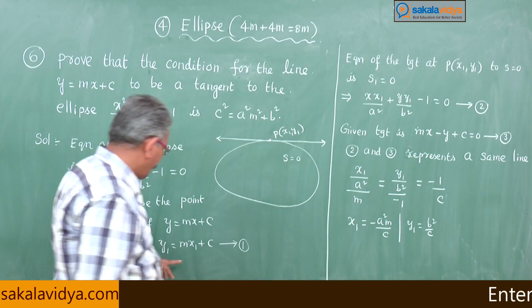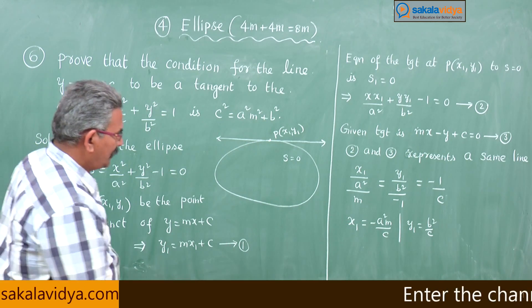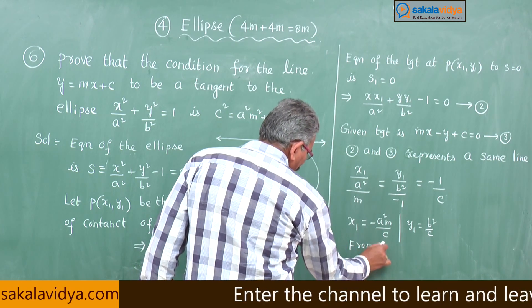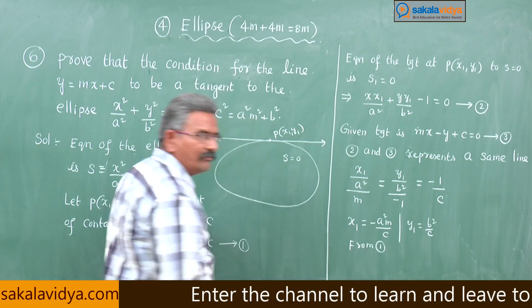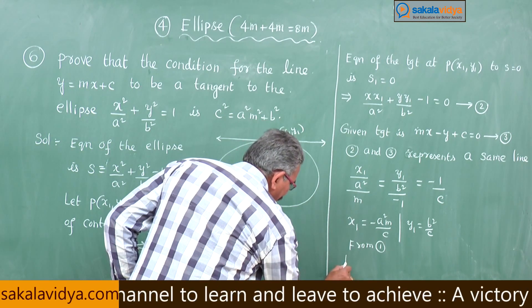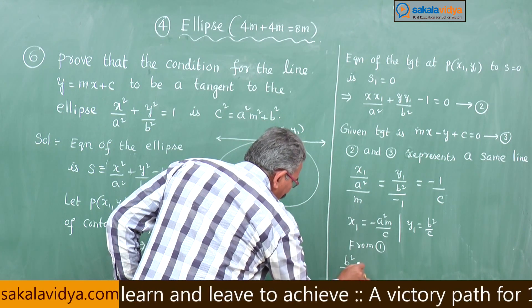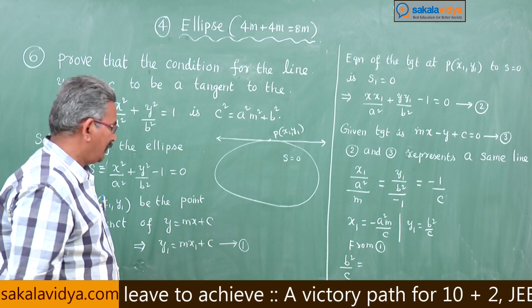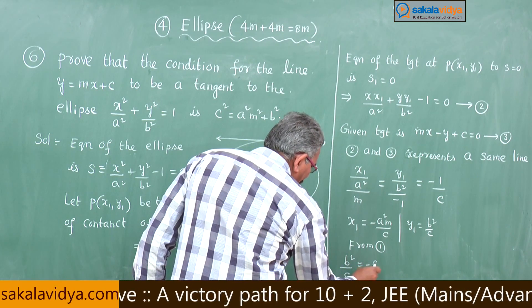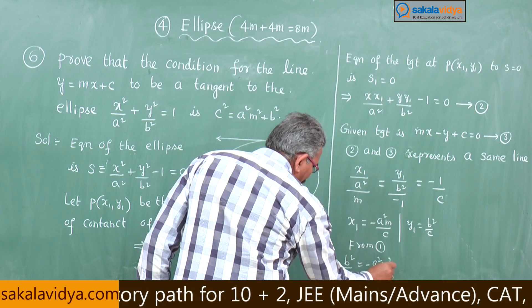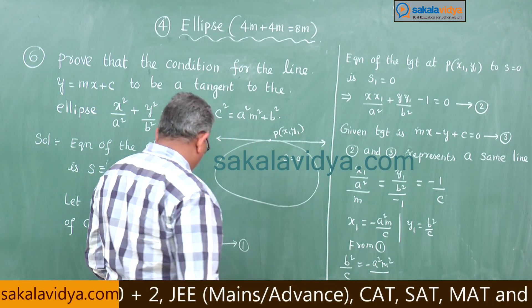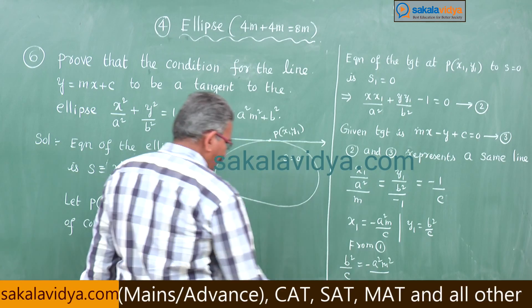These must satisfy equation 1. Substituting into equation 1: b²/c = m(−a²m/c) + c, which gives b²/c = −a²m²/c + c.